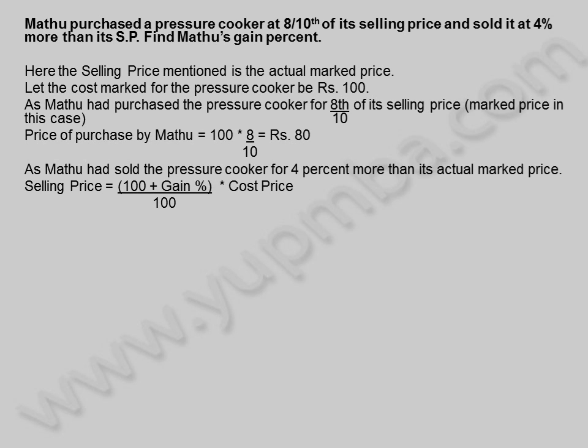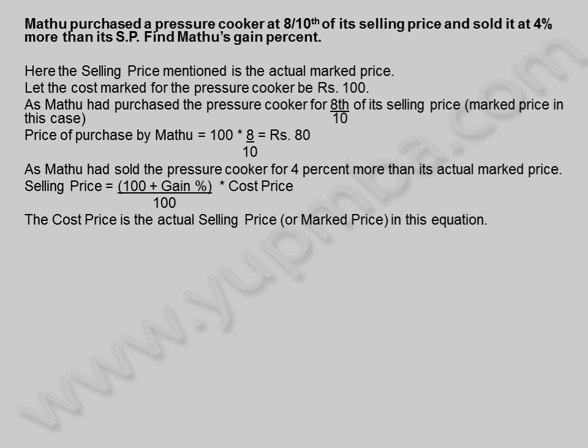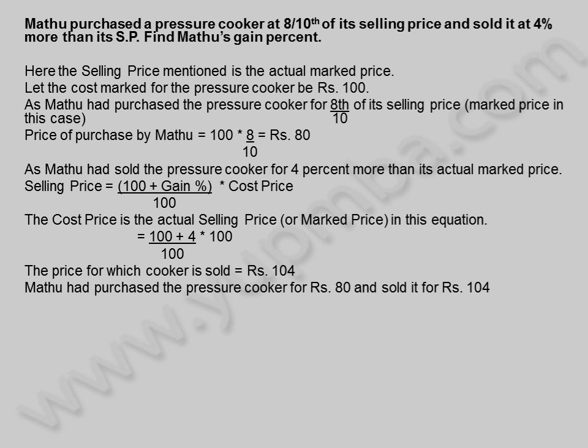As Muthu had sold the pressure cooker for 4% more than its actual marked price, selling price is equal to (100 plus gain percentage) divided by 100, into cost price. The cost price is the actual selling price or marked price in this equation. This is equal to (100 plus 4) by 100 into 100. The price for which the cooker is sold is equal to 104 rupees.